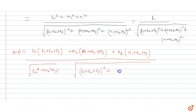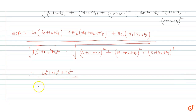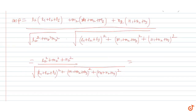The result simplifies: the cross terms L2·L1 plus M2·M1 plus N2·N1 equal 0, and similarly L2·L3 plus M2·M3 plus N2·N3 is 0. So we get L2 square plus M2 square plus N2 square divided by the square root of the same denominator quantity, which gives 1 upon that square root — since the sum of squares of direction cosines equals 1. Therefore cos beta also equals 1 divided by the same quantity.